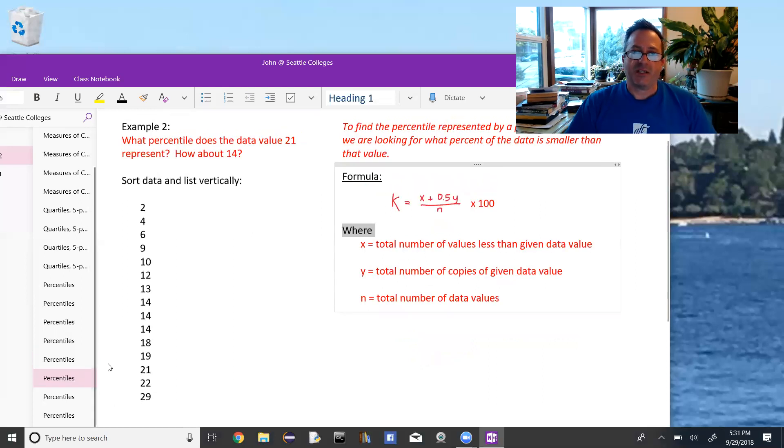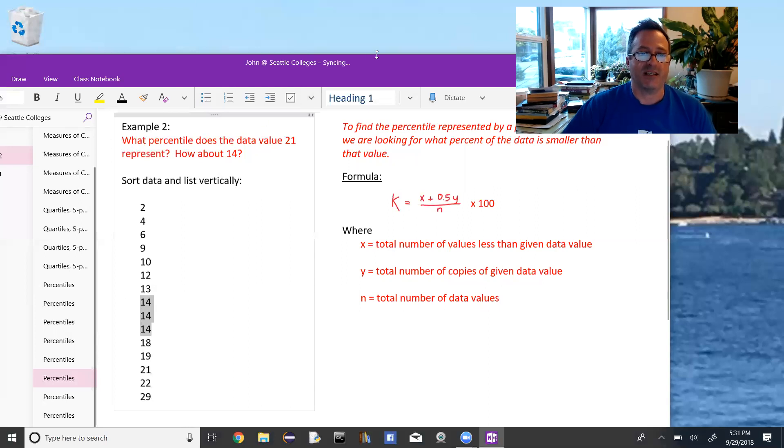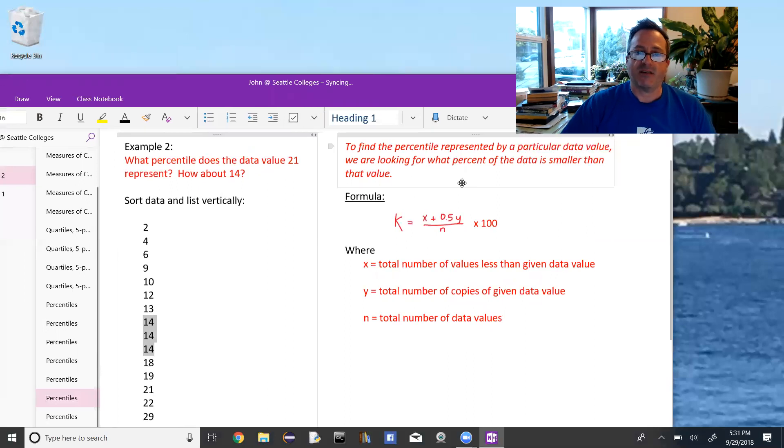If you wanted to switch this problem around and go the other way, you would ask, what percentile does a particular data value represent? Or in this case, we would say, what percentile does the data value of 21 represent? And then I could ask the same thing about the data value of 14. And you notice the difference that 21 only occurs once, whereas 14 occurs three times. And that is going to change the value of how we find what percentile it represents. So to find a percentile represented by a particular data value, we are looking for what percent of the data is smaller than that value.